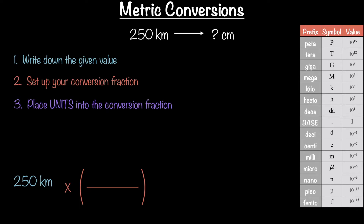Step three: place the units into the conversion fraction. We're going to work with the units before we work with the numbers. This might feel slightly unnatural, but trust me, you want to do it this way. Whatever unit you're given — in this case, kilometers — goes on the bottom. Whatever unit you want to convert into — in this case, centimeters — goes on the top.